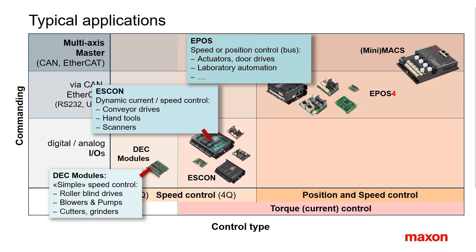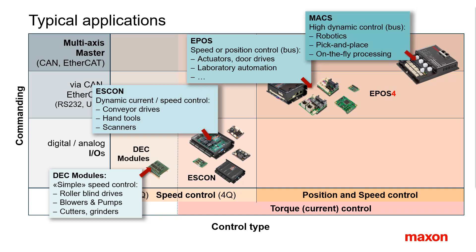The EPOS is the standard solution for positioning or when bus communication is required. Typical applications include all kinds of actuators, laboratory automation, and door drives. Demanding multi-axis control — as in robotics, pick-and-place, and on-the-fly processing — is also possible thanks to the highly performant EtherCAT communication, and the MAX products offer the perfect master systems for these purposes.